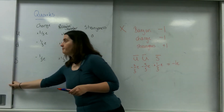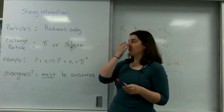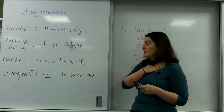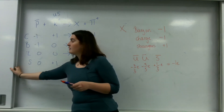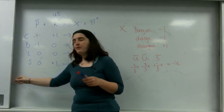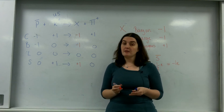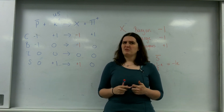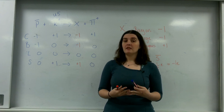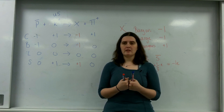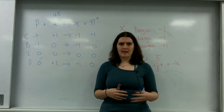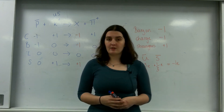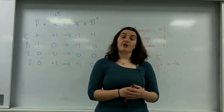This is the strong interaction — it only affects hadrons. The exchange particle, the particle that appears, is either the pion or the gluon. The important thing is that strangeness must be conserved. This is related to the fact that kaons can be made in the nucleus but don't really decay in it — they can be produced in nuclear interactions, but outside the nucleus is where they decay, and outside they don't interact via the strong force. In my next video I'll be talking about the weak interaction.